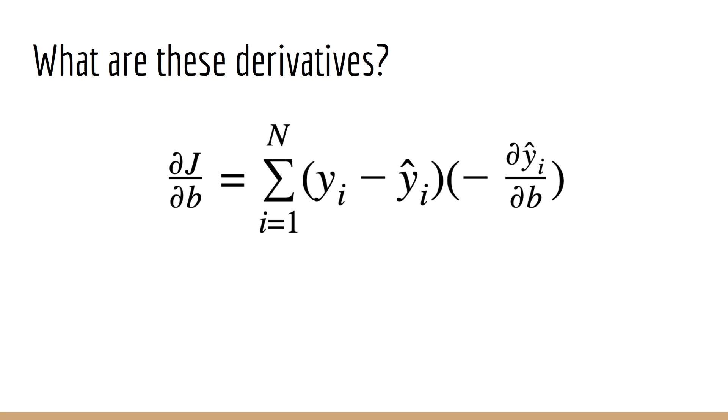Next, let's take the derivative of j with respect to b. We get a very similar derivative except now it's y sub i minus y hat sub i times the derivative of y hat sub i with respect to b. Of course that's just one. So this simplifies to the sum over e sub i equals zero.